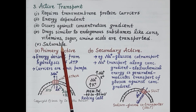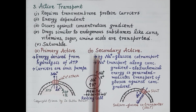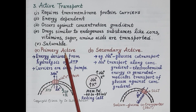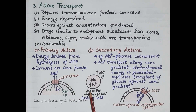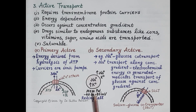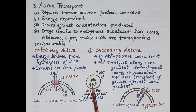Active transport is of two types: primary active transport and secondary active transport. Looking at this figure of a resting cell: the membrane potential inside the cell is minus 40 to minus 80 millivolts (negative). The concentration of sodium ions is higher in the extracellular fluid, whereas the concentration of potassium ions is higher in the intracellular fluid.